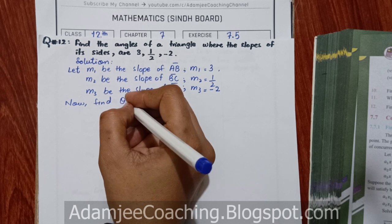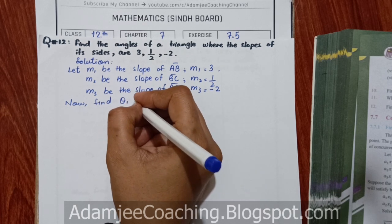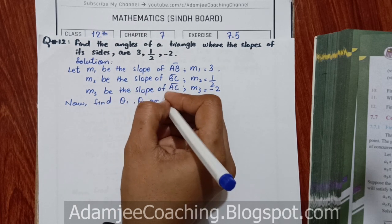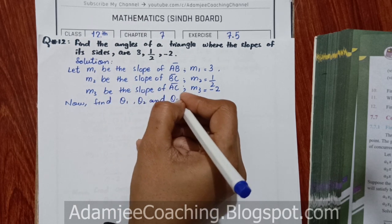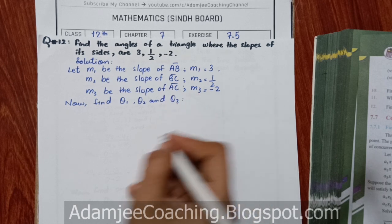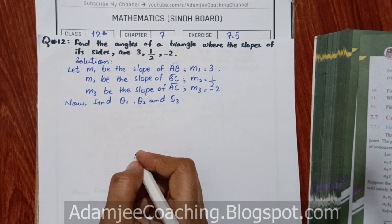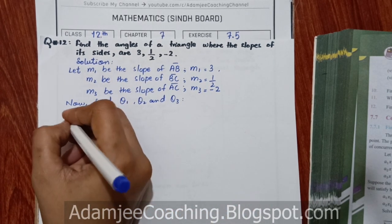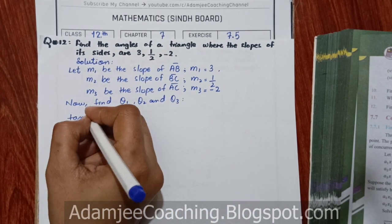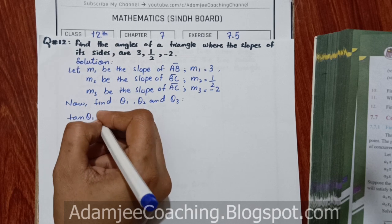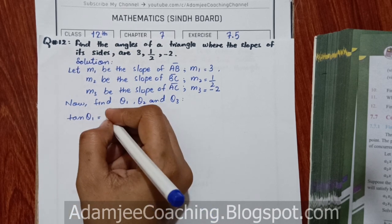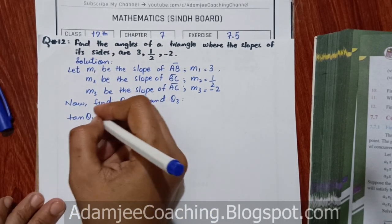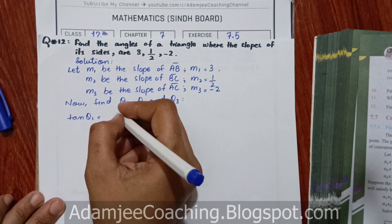Now we need to find Theta1, Theta2, and Theta3. To find Theta1, we will use the angle between lines AB and BC.